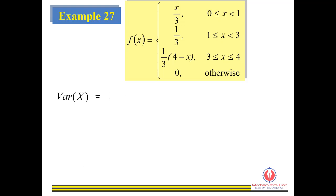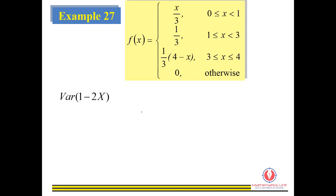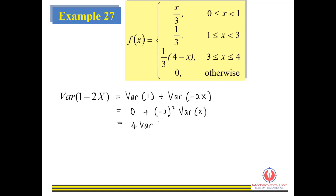To find the variance, the formula is E(X²) minus [E(X)]² — the square is outside the bracket. We substitute the answers from previous steps and get the variance. For variance of (1 minus 2X), we separate it: variance of the constant 1 equals 0, and for negative 2, we square it — don't forget variance requires squaring the constant — giving 4·Var(X). We substitute the variance we just found and get the final answer.